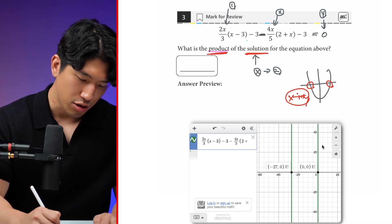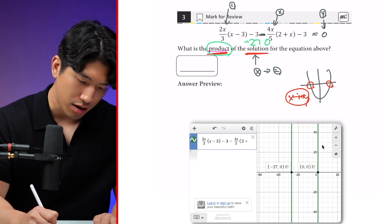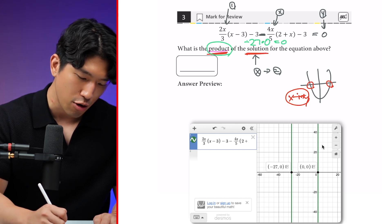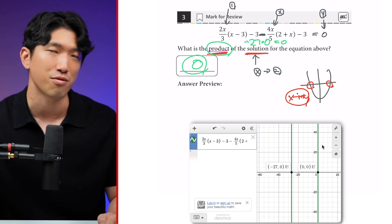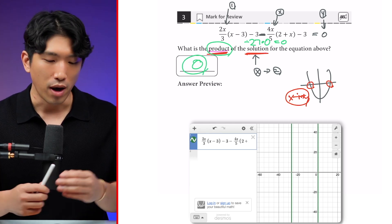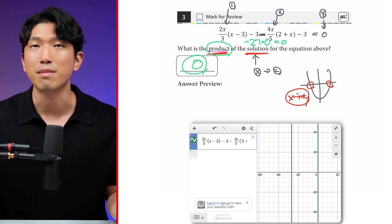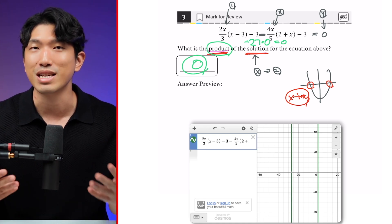So what are my solutions? It's going to be -27 and zero. And what is the product? Let's multiply it. It's going to be zero. So my final answer is going to be zero. So does that make sense? So anytime you have one equation, one unknown variable, then pop into Desmos and go to the x-intercepts.